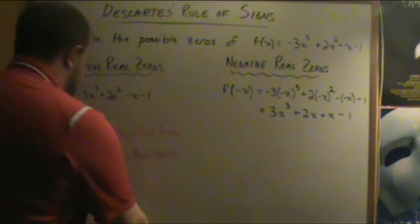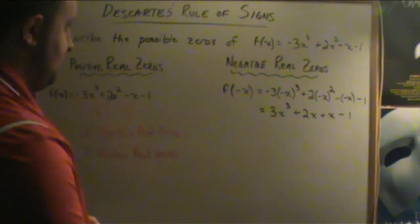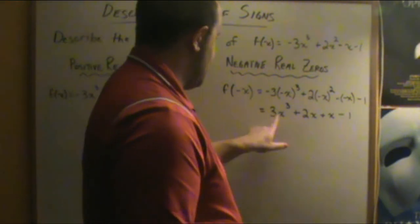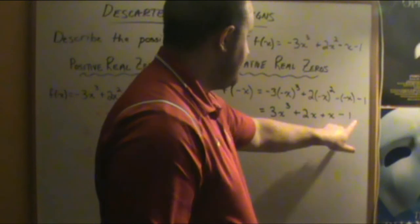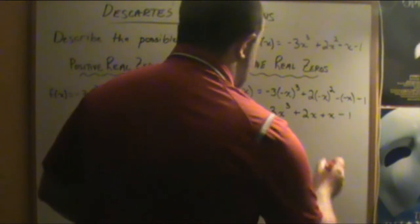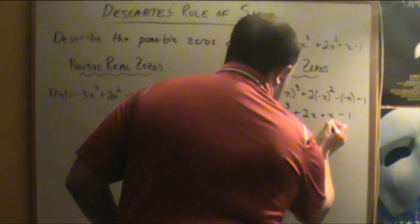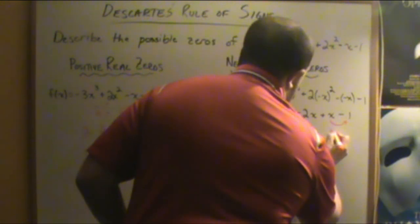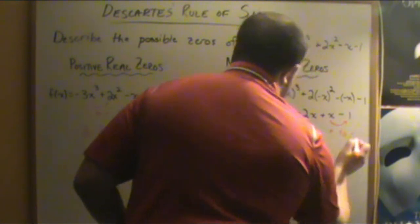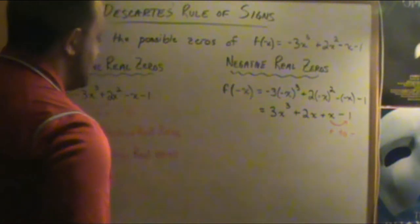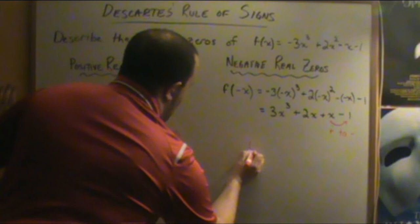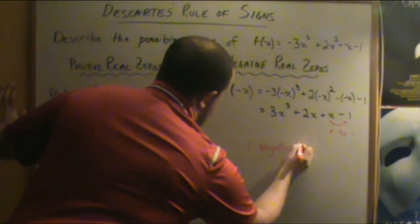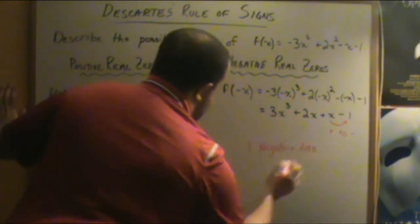What you should notice is that these coefficients — 3x, 2x, and x — are all positive. The constant here is negative. The only sign change is from the linear term x to the constant, going from positive to negative. So that tells us there is one possible negative zero.